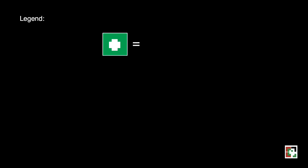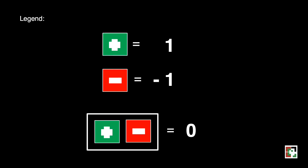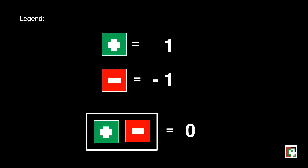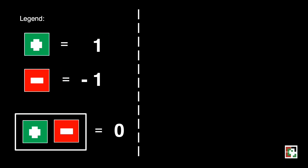Let's take note of the following: 1 green square is equal to 1, and 1 red square is equal to negative 1. If we have a pair of 1 green square and 1 red square, that is equivalent to 0, or we call this one a zero pair.